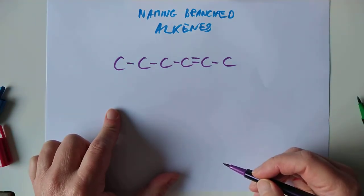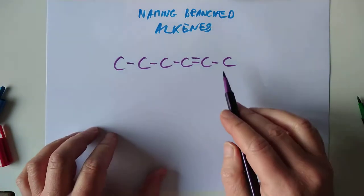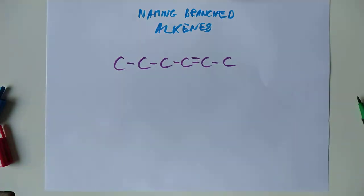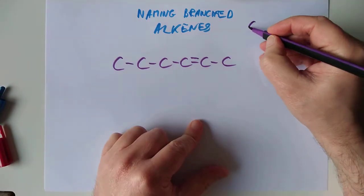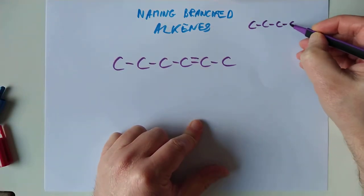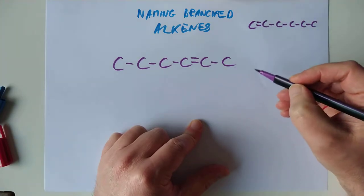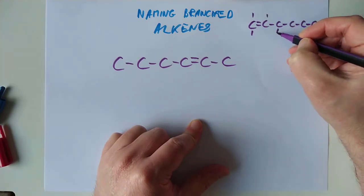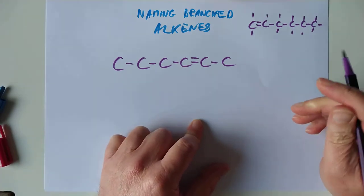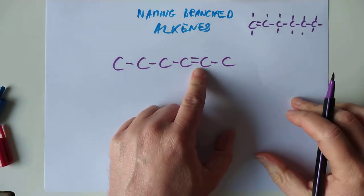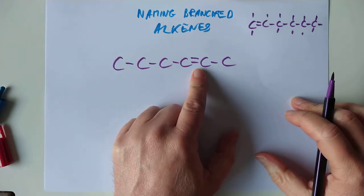Now, instantly we run across a problem. Because if you have a look at that, that is going to be hexene. Isn't it good enough to just say hexene? No, it's not. Because this is also hexene. They're not the same molecule. They are isomers of each other. So the position of the double bond needs to be clear. And at the moment, just calling these hexene is not good enough.